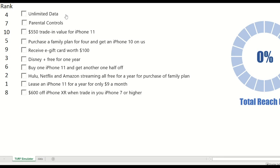These range from offering unlimited data, parental controls, to offering Disney Plus for a year, or Hulu, Netflix, and Amazon streaming for a purchase of a family plan, to leasing an iPhone 11 for a year for only $9 a month. But what minimal combination of these will appeal to the largest market?